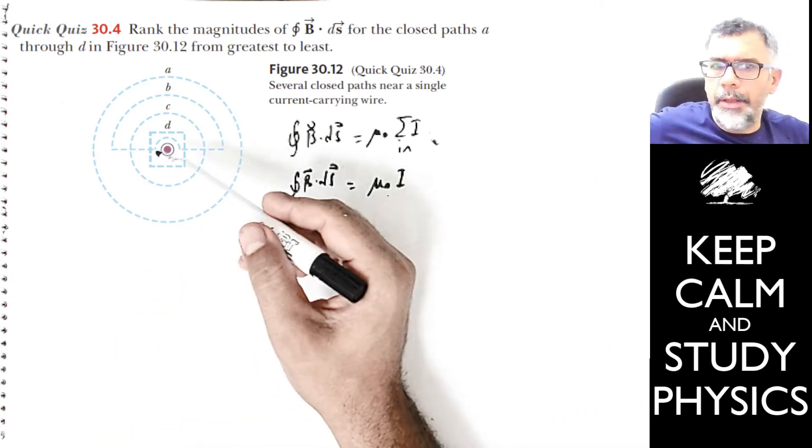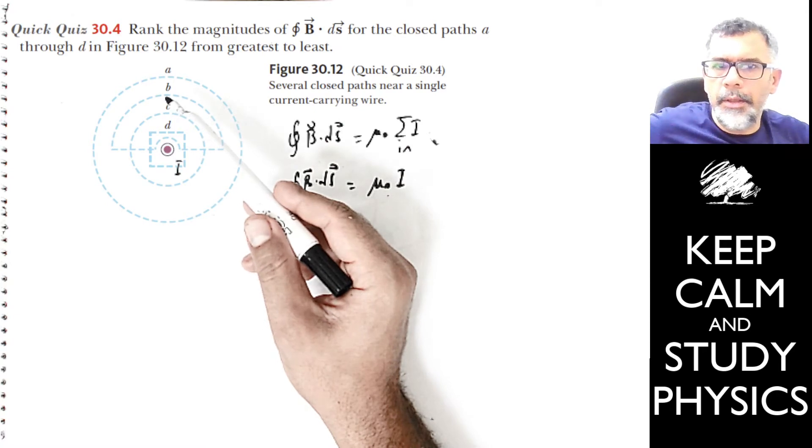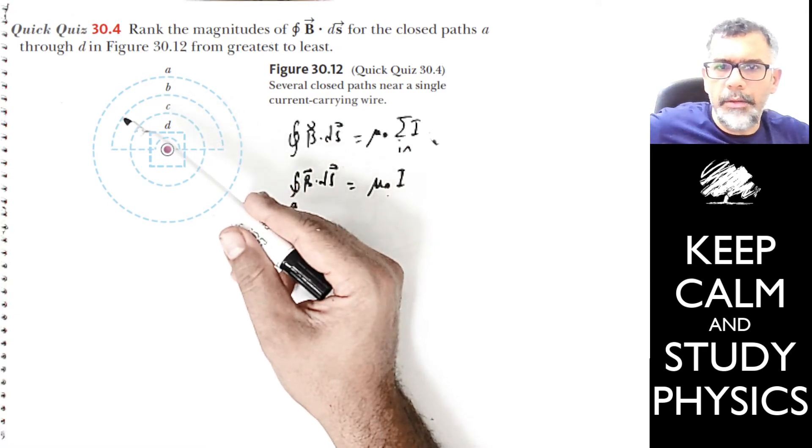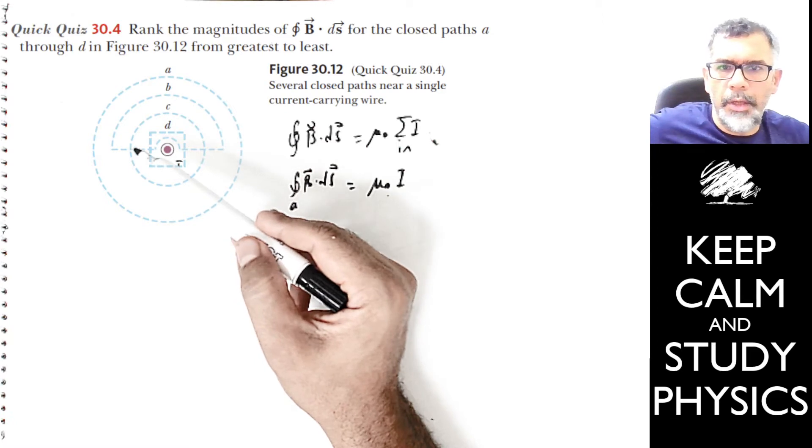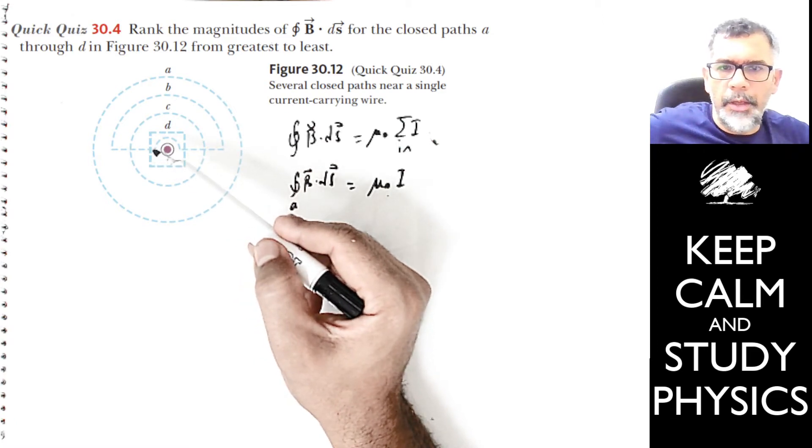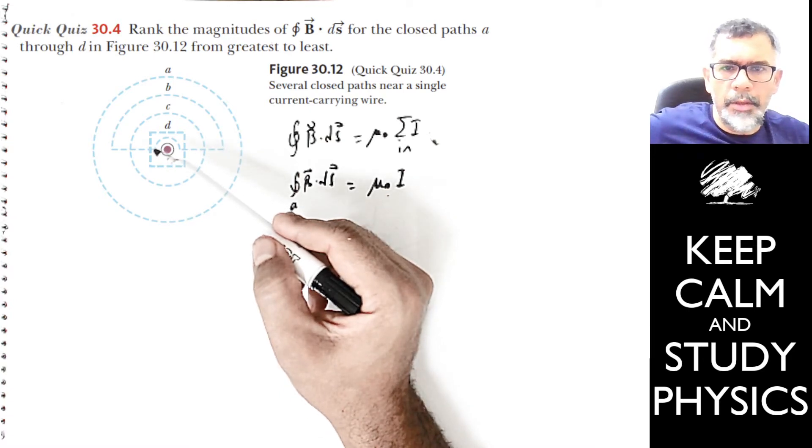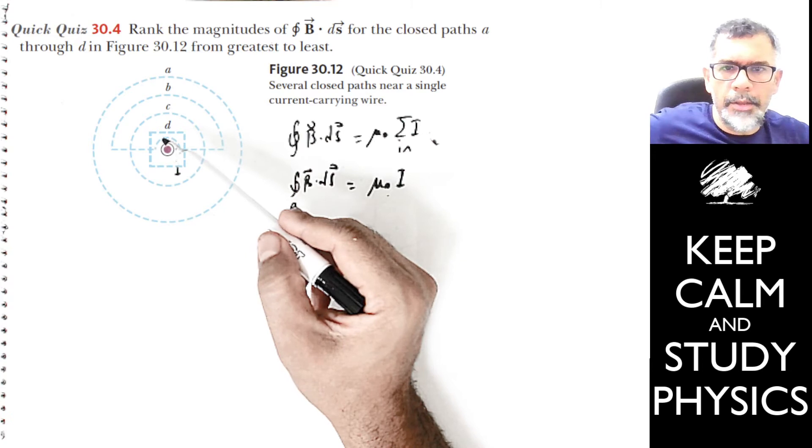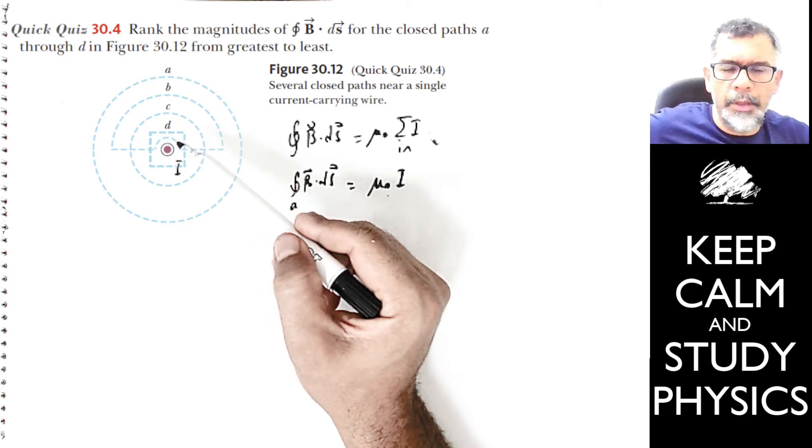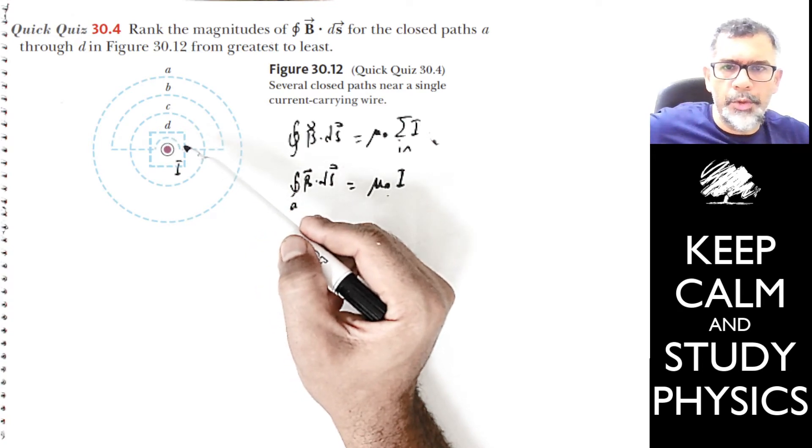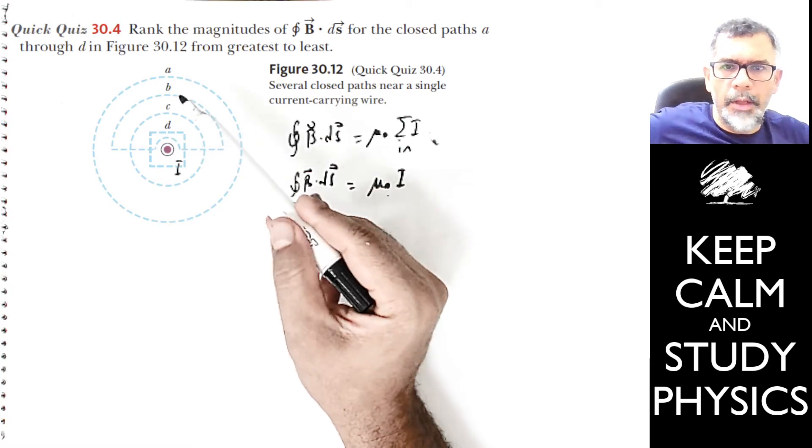Let's look at path B. Path B is like a semicircle. It comes over here, but when it reaches the location of this current, it curls as another semicircle, putting the current outside the closed path.